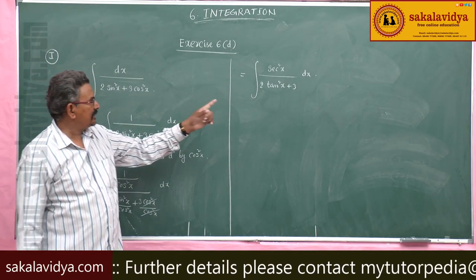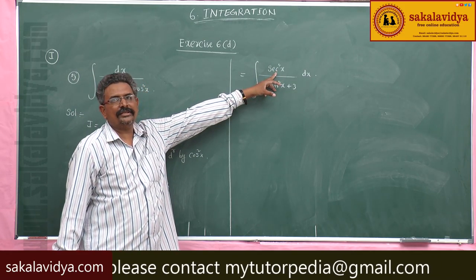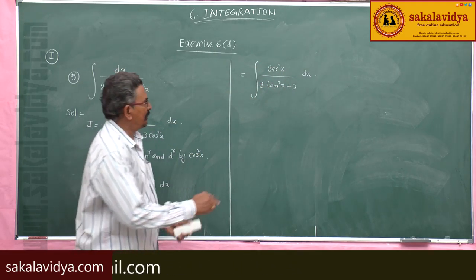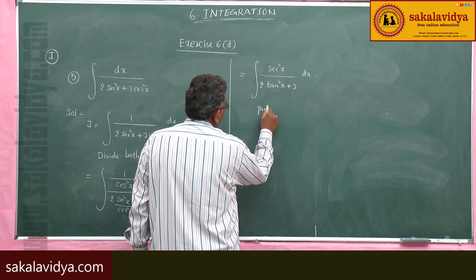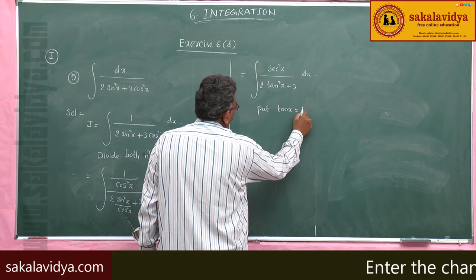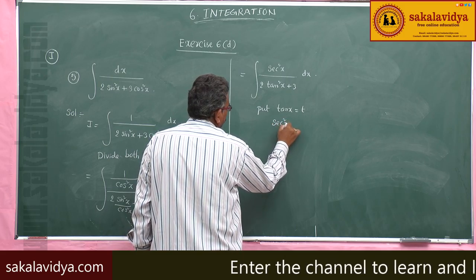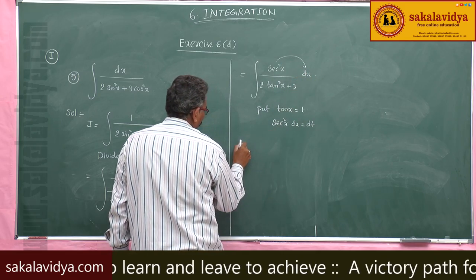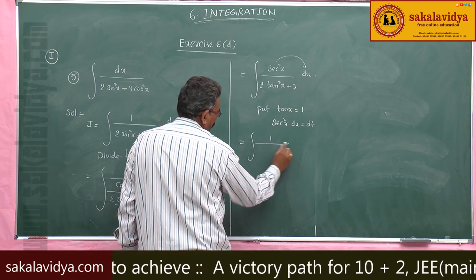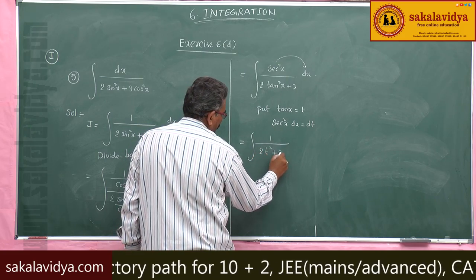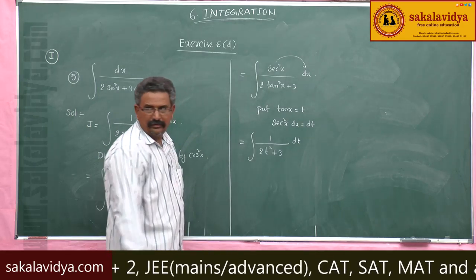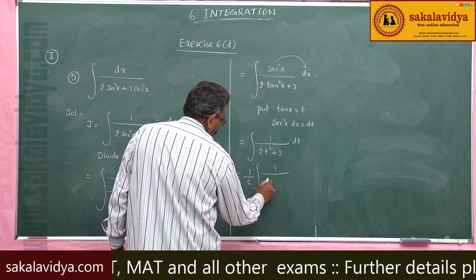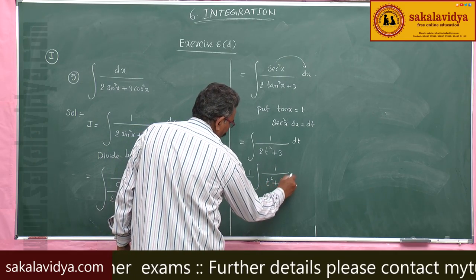Now put tan x equal to t. Secant squared x is the derivative of tan x, so secant squared x dx becomes dt. This integral becomes integral 1 by 2t squared plus 3 dt. Taking 2 as common factor outside, this is 1 by 2 integral 1 by t squared plus 3 by 2 dt.